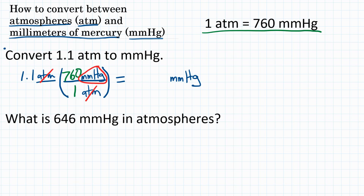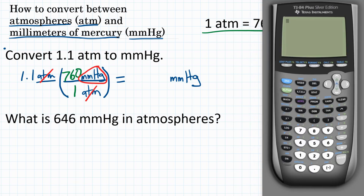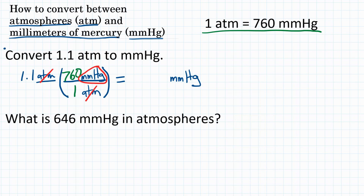Now we can do the math. We start with 1.1, and since we're multiplying by a conversion factor that is a fraction, we multiply by the top and divide by the bottom. The bottom is just one, so we basically just multiply by 760. The calculator gives us 836. So our final answer is 836 millimeters of mercury.